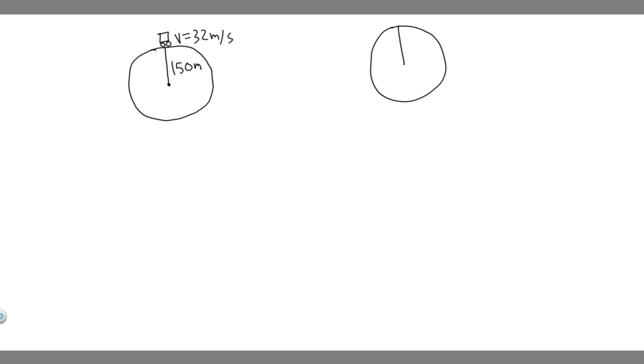This one's going to be a bit — and this isn't drawn to scale by the way — but this one's 75 meters, and so the truck's going to be going around it, and we want to find the maximum velocity that can go around this one.